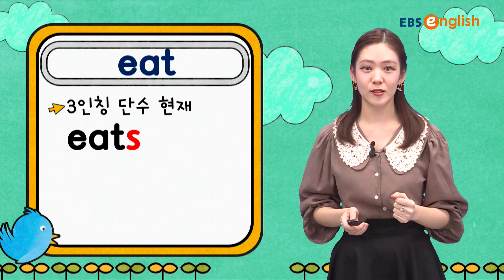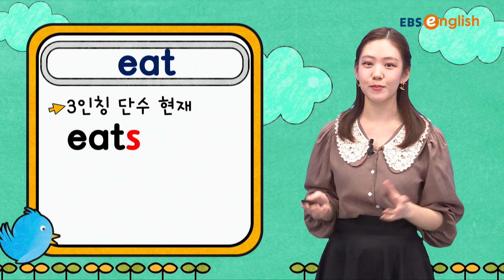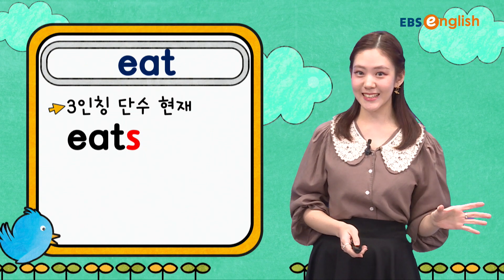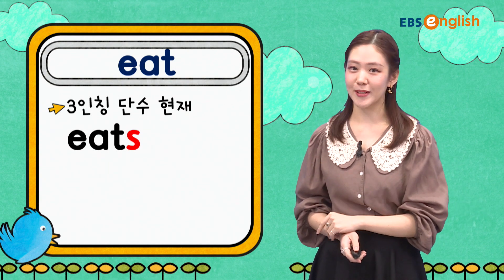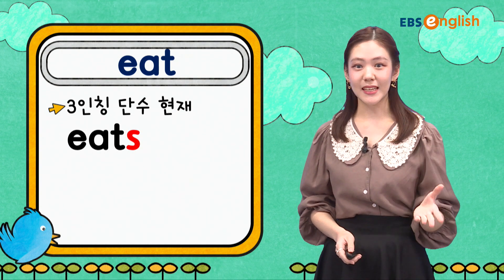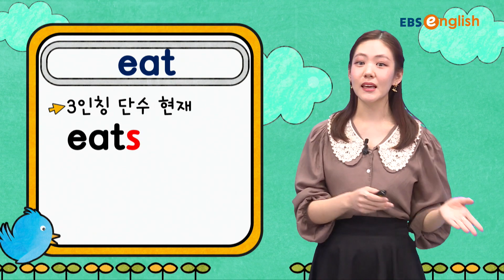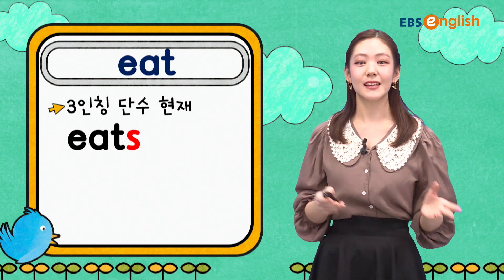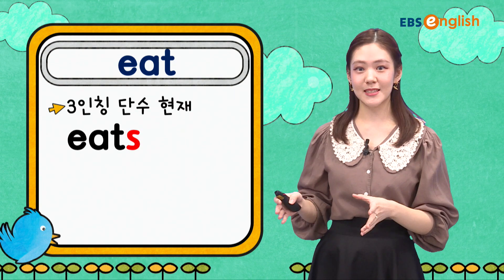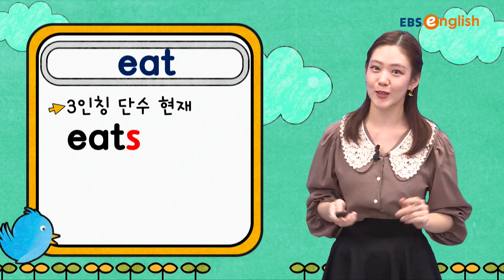3인칭 단수죠? He or she. 그 혹은 그녀가 문장의 주어로 올 때는 뒤에 S가 붙어요. 그래서 eat가 eats가 됩니다. 뒤에 S 발음 주의해 주셔야 합니다. Eats. He eats, she eats 하게 되는 거죠. 뒤에 음식이 오면 돼요. He eats bread. 그는 빵을 먹는다.